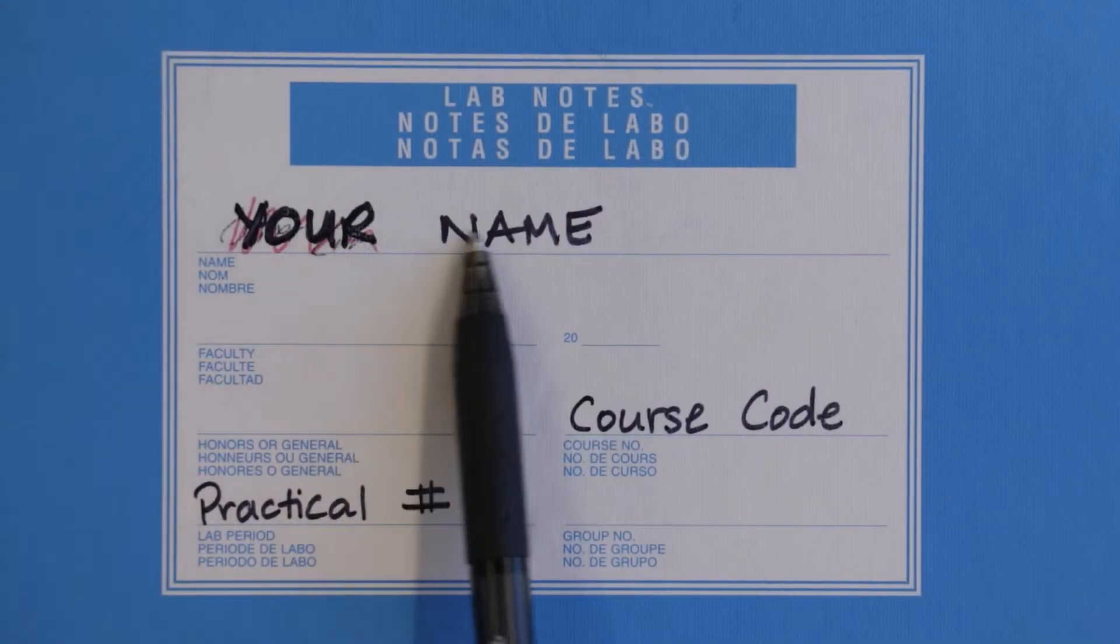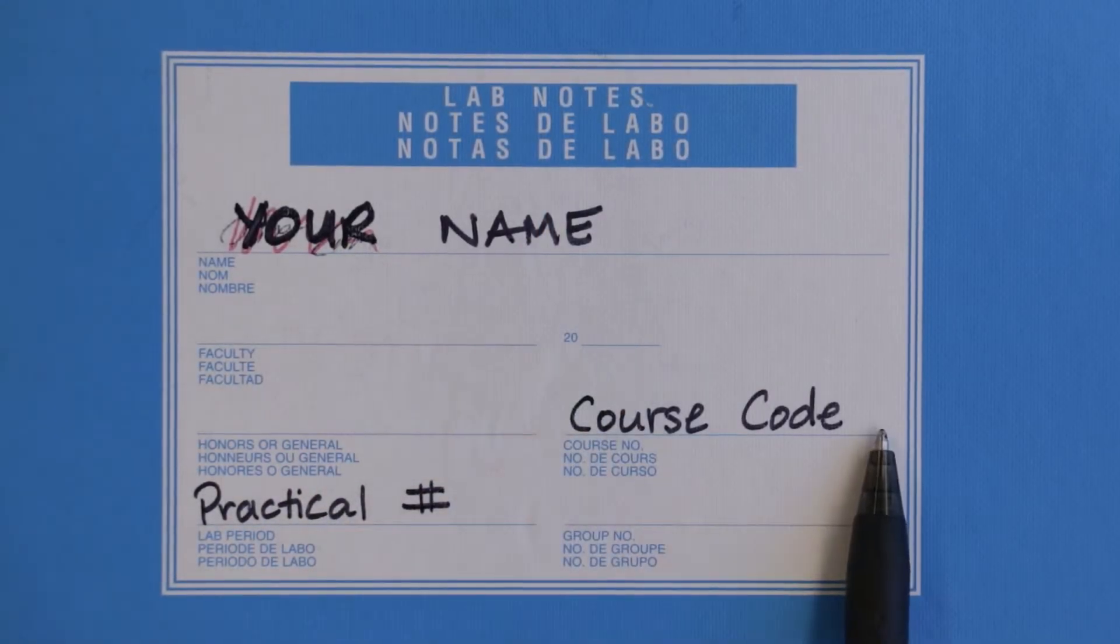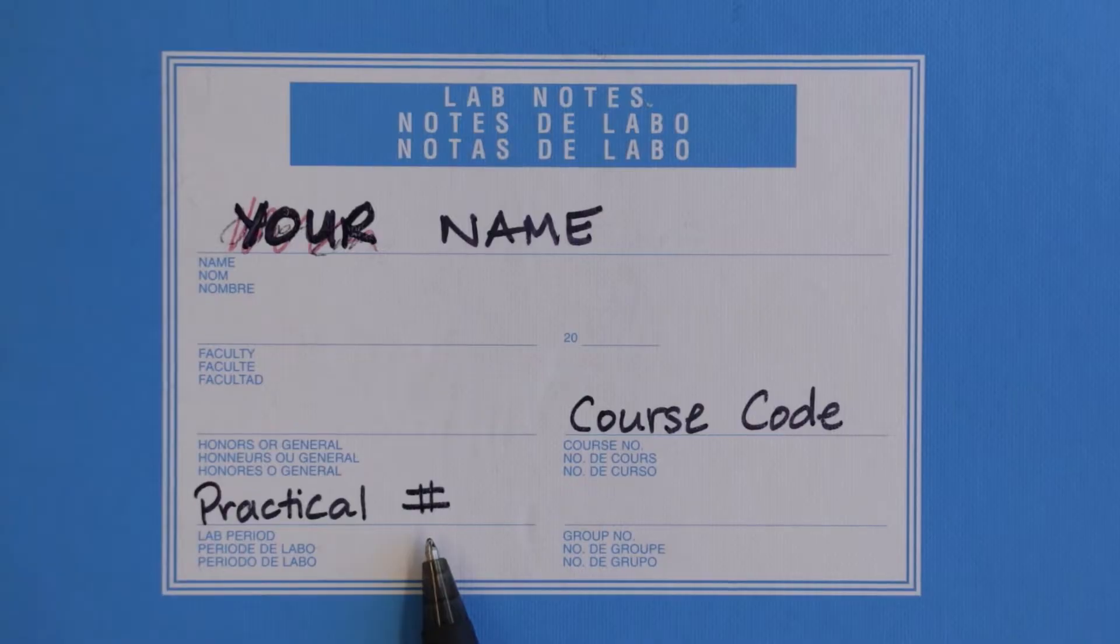On the cover: your name, course code, and practical number. Never put your student number on your notebook. Use permanent ink. Legally it must be blue or black ink.